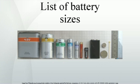Battery chemistry. The terminal voltage of a battery cell depends on the chemicals and materials used in its construction, and not on its physical size. For example, primary alkaline batteries have a nominal voltage of 1.5 volts. Rechargeable NiCd (nickel-cadmium) and NiMH (nickel-metal hydride) typically output 1.25 volts per cell.